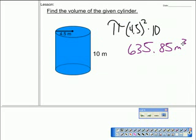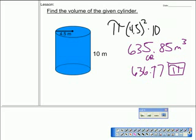635.85 cubic meters. It's a volume, three dimensions. That's why it's cubic meters. You use the pi button. That's correct. If you use the pi button, this is what you get for the answer. They're both correct. This is what you get if you use 3.14. Both answers are correct. That's fine.